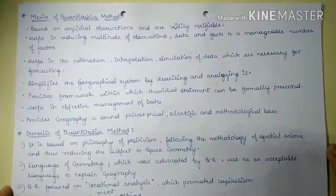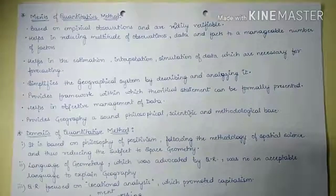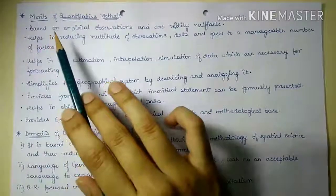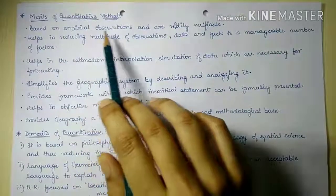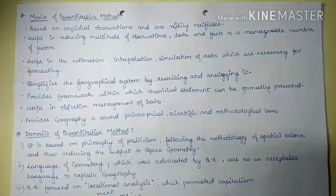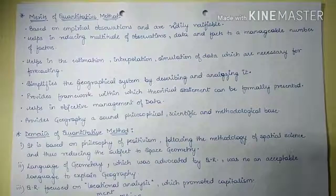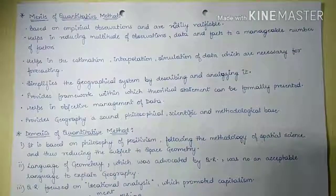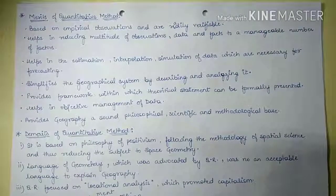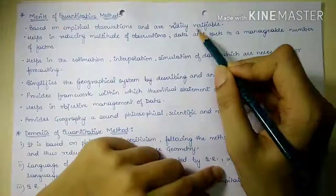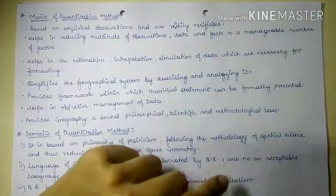Now let's look at the merits of quantitative revolution. First, quantitative revolution is based on empirical observation and results are readily verifiable. Each and everything in quantitative revolution is based on empirical analysis and observation — it does not have any normative aspect, so it can easily be verified.